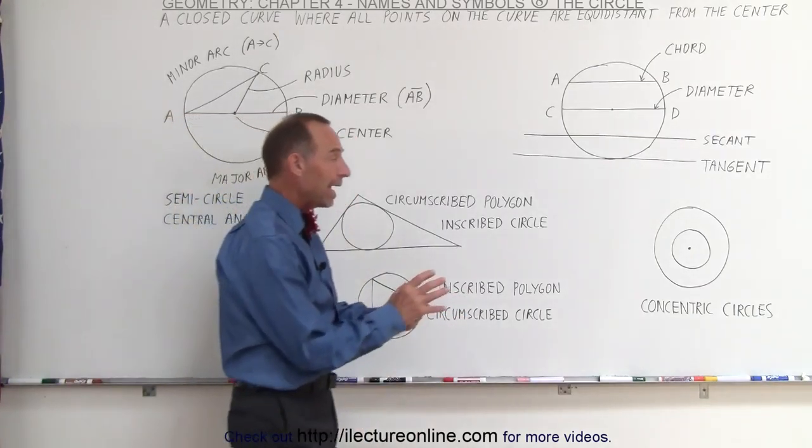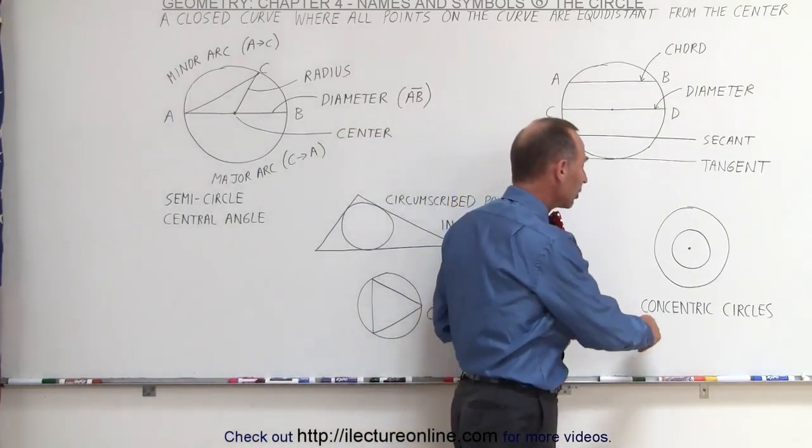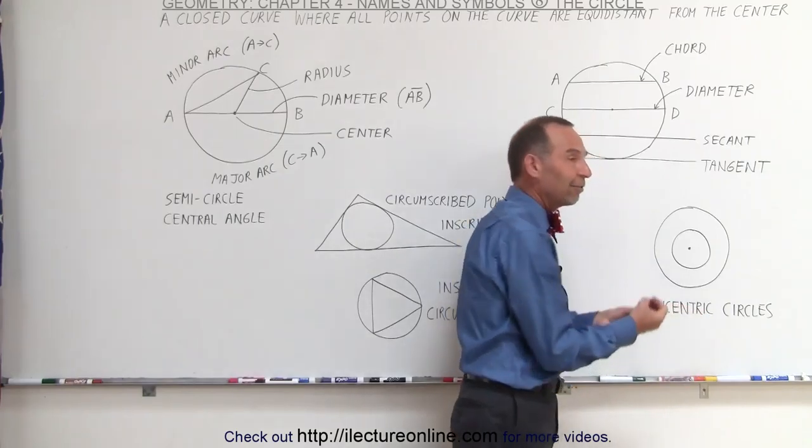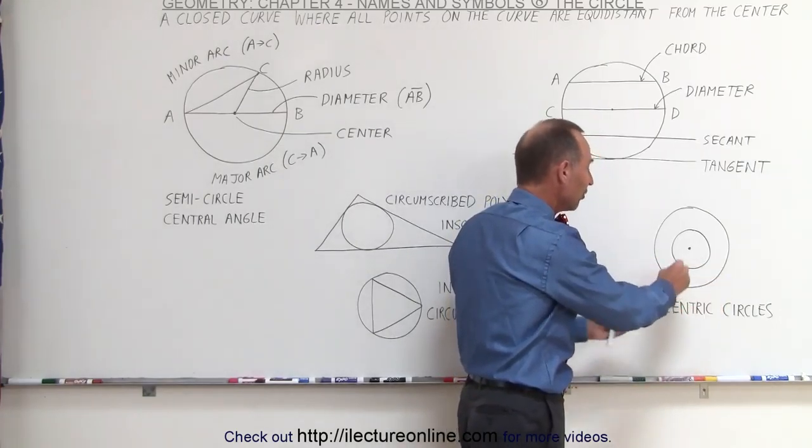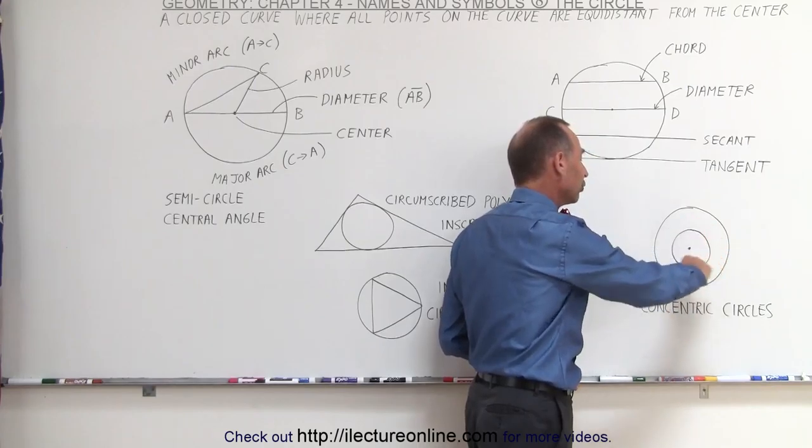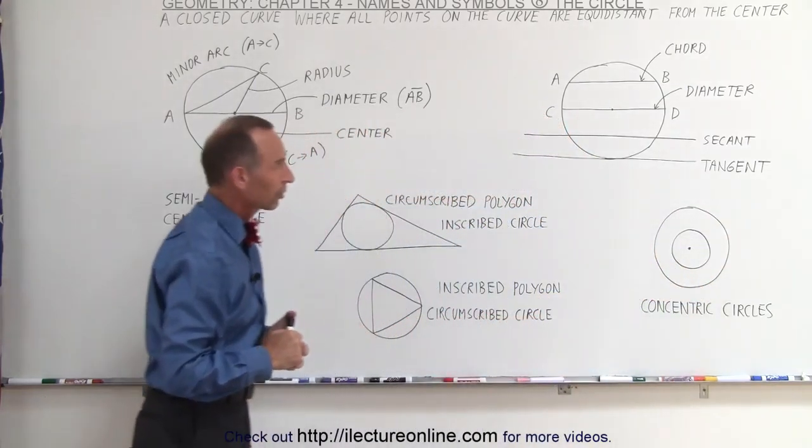And finally, what if we have two circles that have the same center? Those are called concentric circles. They have the same center, so co- and centric is the word that determines that it's the same center. Therefore the two circles have the same center, they're called concentric circles.